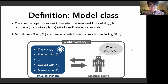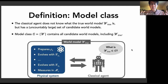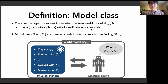However, we assume the classical agent has a set of candidate world models. This set could be uncountably large, or perhaps using some prior physical knowledge, one can restrict it. We call this set a model class — following machine learning terminology where people call it a hypothesis class. It's simply the set of all candidate world models, including the true world model. The classical agent knows what this set is but doesn't know which element is the true world model.